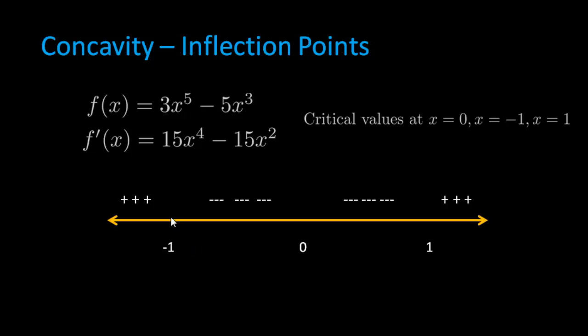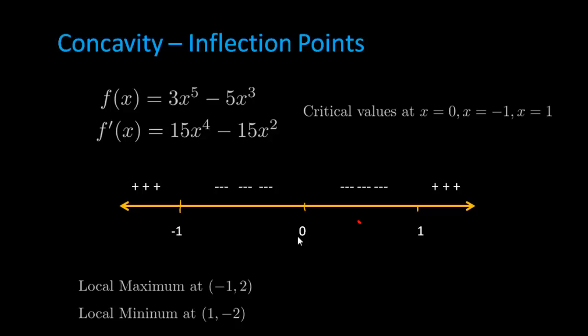We then plotted that on a number line. And what we found was that we had a local max at negative 1, 2. Remember, this is the actual point. And it was a local max because it's going up and then it's going down. Now, we had nothing happening at 0 because we are going down, and then we're going down again. So nothing happened. And then at 1, we had a local minimum because we're going down and then we're going back up. Now, if you write this information down in intervals in terms of increasing and decreasing, we know that we're increasing from negative infinity all the way out to negative 1. And then we are increasing again from 1 to infinity. We're decreasing from negative 1 to 1. So the first derivative test gave us all of this information.